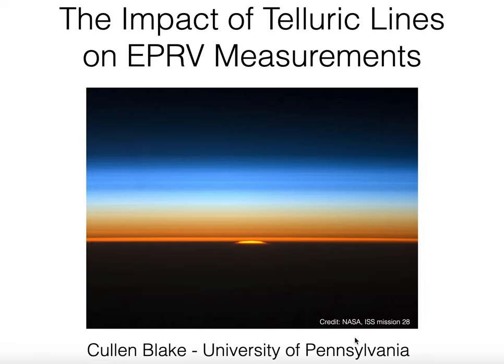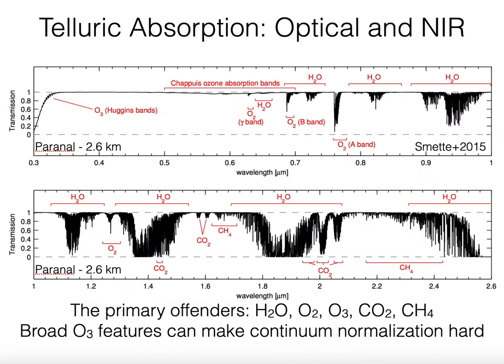Earth's atmosphere is wonderful—it provides a nice place for us to live and generates beautiful sunsets like the one shown here. But as ground-based astronomers we also have to contend with a number of negative effects that Earth's atmosphere has on our astronomical observations. One of those effects is what I call telluric absorption—that is, absorption by molecules in Earth's atmosphere of starlight and galaxy light.